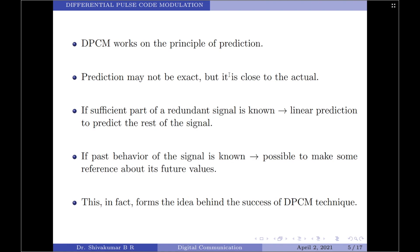Let us now talk about DPCM. DPCM works on the principle of prediction, that is, the value of the present sample is predicted from the previous samples. Please note the prediction may not be exact, but it is very close to the actual sample value. Now, if we know a sufficient part of a redundant signal, we may use linear prediction to predict the rest of the signal or at least make the most probable estimate. In particular, if we know the past behavior of the signal up to a certain point in time, then it is possible to make some reference about its future values. This in fact forms the idea behind the success of the DPCM system.